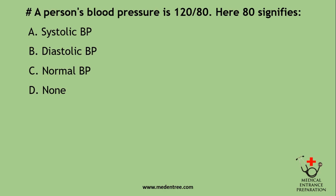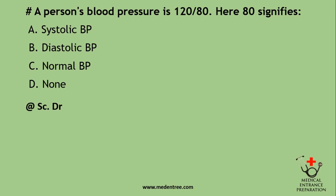A person's blood pressure is 120/80. What does 80 signify? Options: systolic, diastolic, normal, or none. Normal BP is 120/80, so option C is discarded. Systolic blood pressure is recorded when the ventricles contract and is generally higher. Diastolic is when the ventricles relax, so it is the lower value. Here, 80 is the diastolic blood pressure. A useful mnemonic: 'To become a Doctor one should study Science' — Systolic = Contract, Diastolic = Relax (SC DR).